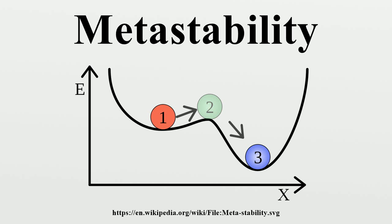Sand piles are one system which can exhibit metastability. Sand grains form a pile due to friction, and it is possible for an entire large sand pile to reach a point where it is stable, but the addition of a single grain causes large parts of it to collapse. The avalanche is a well-known problem with large piles of snow and ice crystals on steep slopes. In dry conditions, snow slopes act similarly to sand piles — an entire mountainside of snow can suddenly slide due to the presence of a skier, or even a loud noise or vibration.